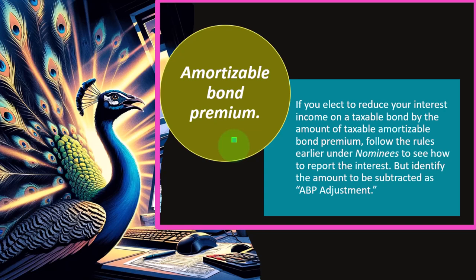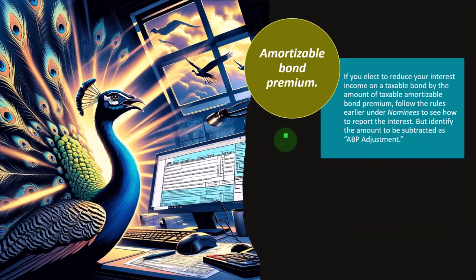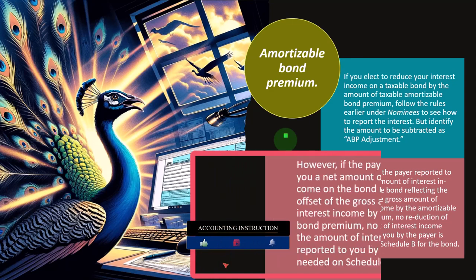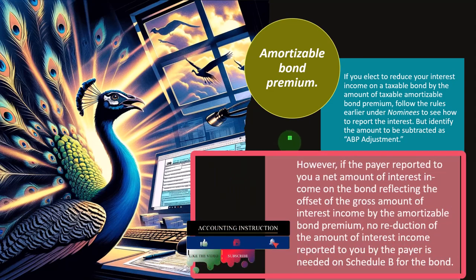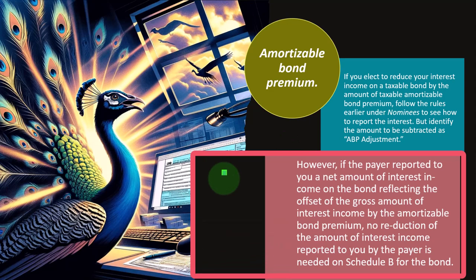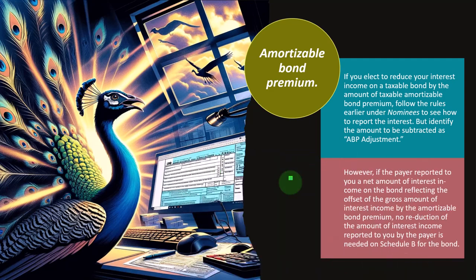Amortizable Bond Premium: again, this is somewhat of an unusual situation for the same rationale — many investors are investing in bonds through mutual funds and ETFs, so they may not have the same kind of issue. If you elect to reduce your interest income on a taxable bond by the amount of taxable amortizable bond premium, follow the rules under Nominees to report the interest, but identify the amount to be subtracted as 'ABP Adjustment.' However, if the payer already reported to you a net amount of interest income reduced by the amortizable bond premium, no reduction of the interest income reported by the payer is needed on Schedule B for that bond.